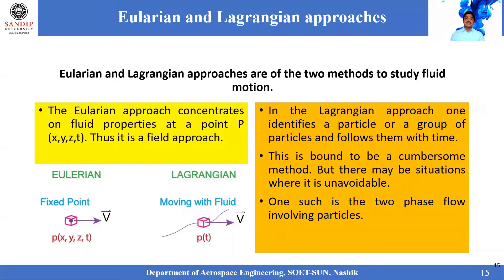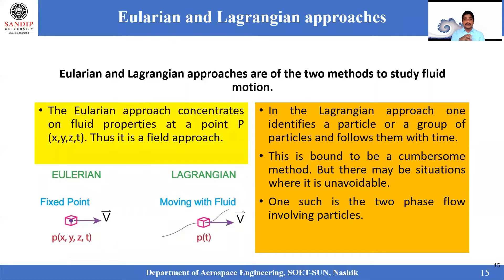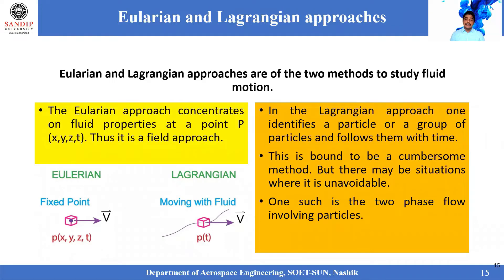Whereas in the Lagrangian approach, it will initially identify some particles or a group of particles, and then it will start tracing that group of particles, following them with respect to time.